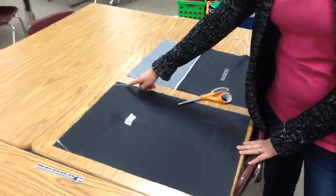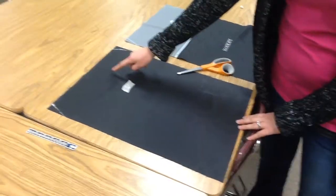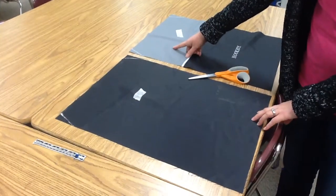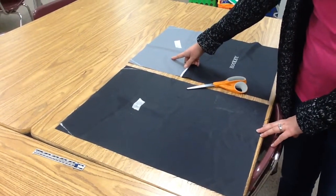After you have measured and drawn your lines across the top of your back piece and your top front piece, you are going to get these checked by the teacher before you cut.